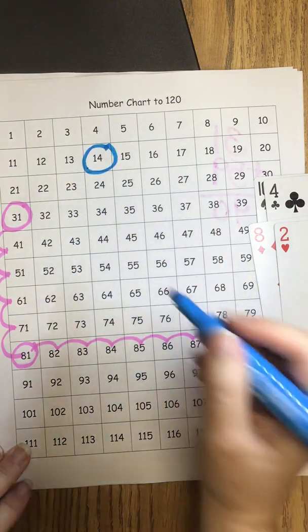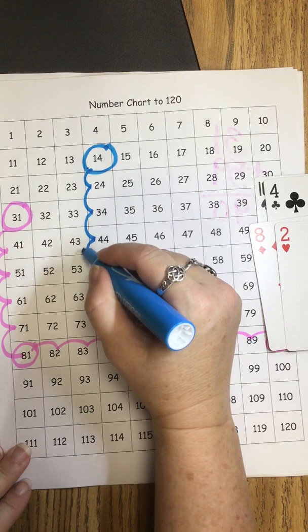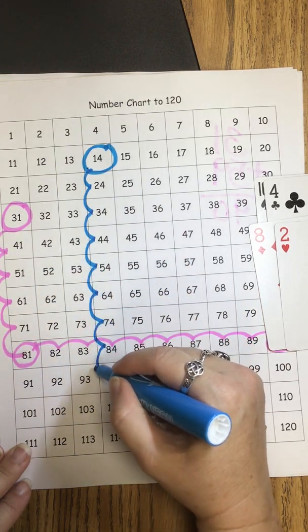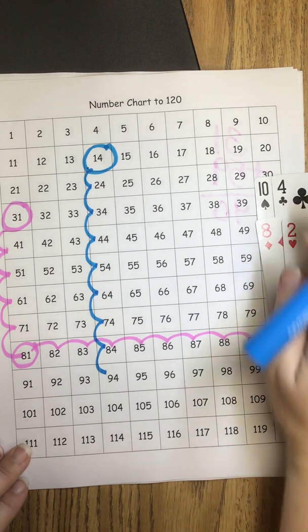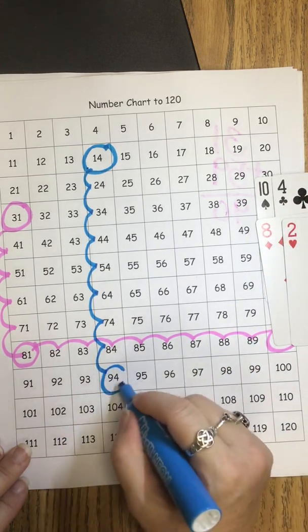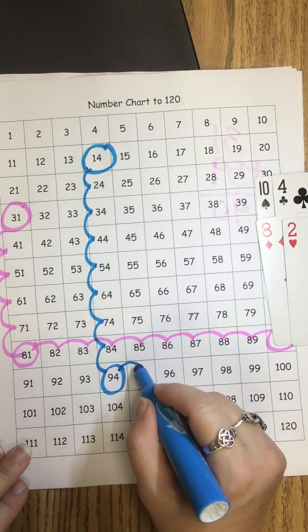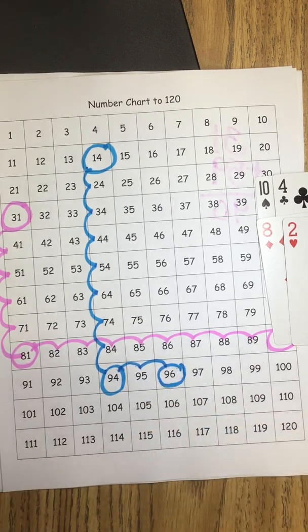And they're going to add 8 tens. So 1, 2, 3, 4, 5, 6, 7, 8. They added 8 tens to 14. And they're on 94. Now we need to add 2 ones. 1, 2. So they landed on 96.